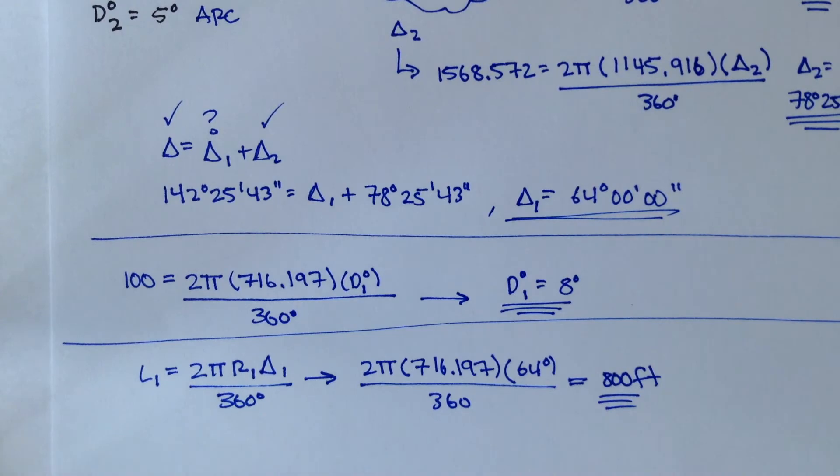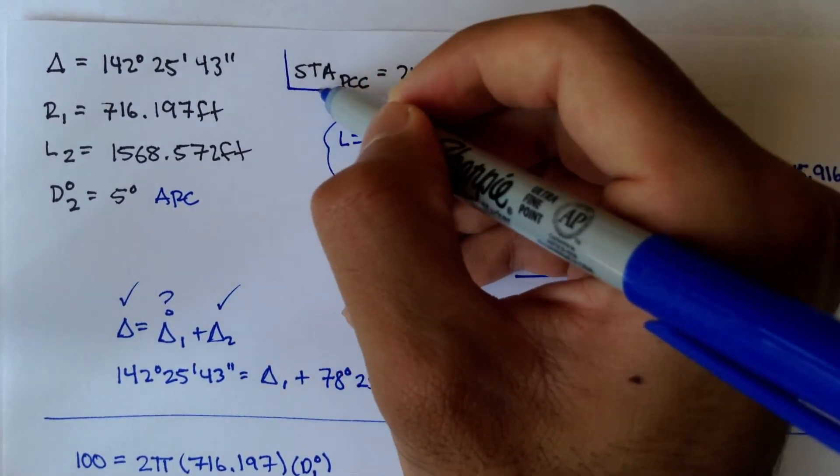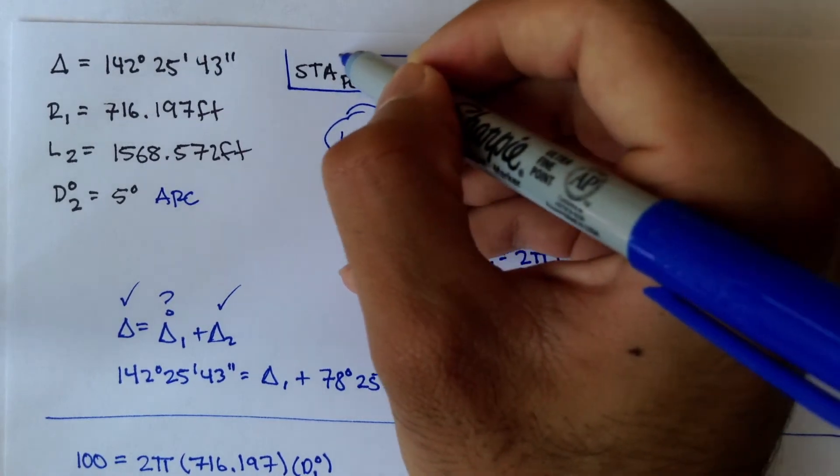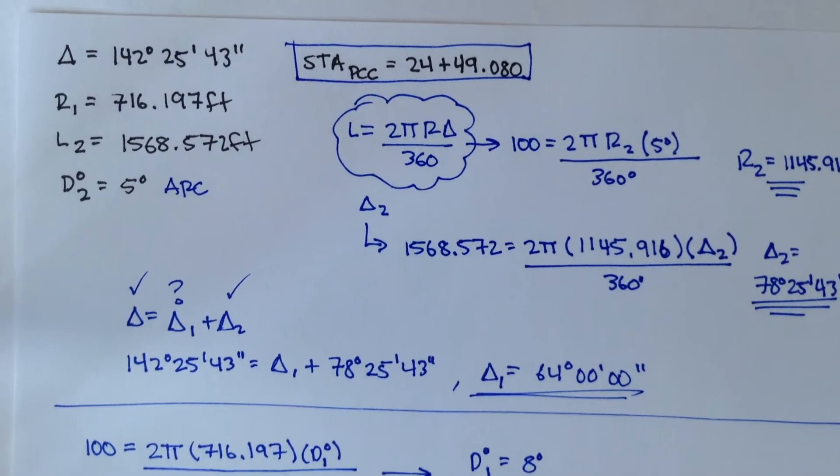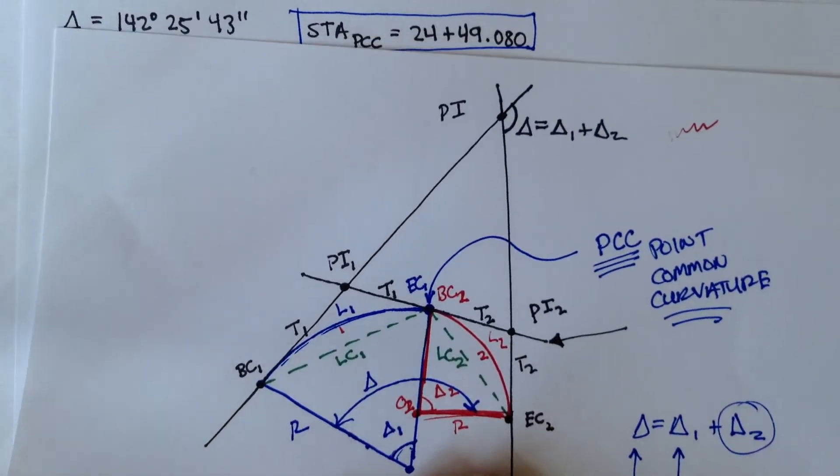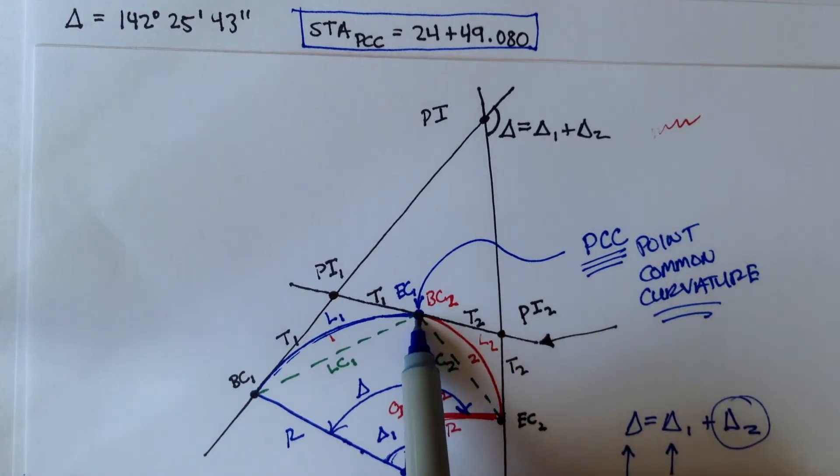we're given the station for the point of common curvature, and that's at 24 plus 49.080. So that's the station for the point of common curvature. That's the station of this point.